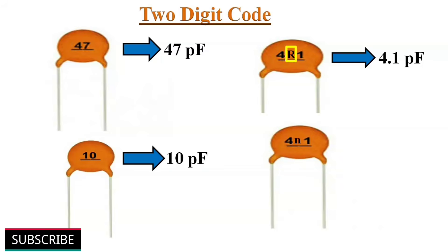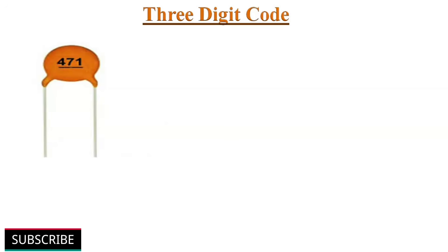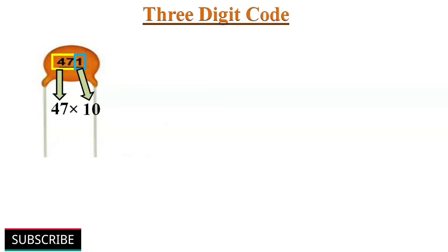Sometimes the alphabetic letter N is used to indicate a nanofarad capacitor. For example, a capacitor labeled as 4N1 indicates 4.1 nanofarad capacitance. A 3-digit code consists of two value digits and a multiplier, much like resistor color codes.